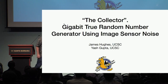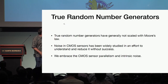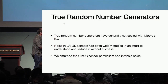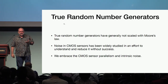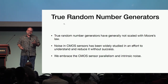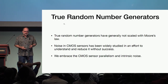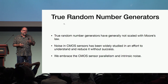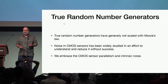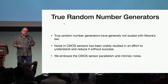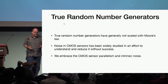True random number generators are typically produced a bit at a time, and random number generators have typically not scaled with Moore's Law.